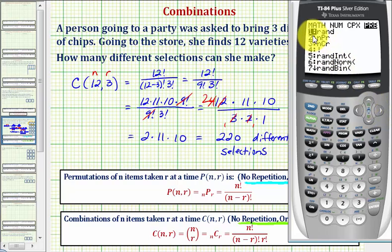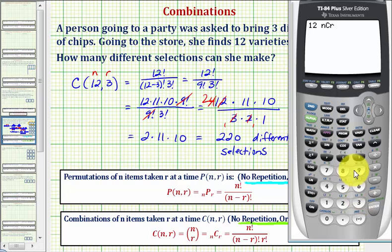So we can press three, or go down and highlight three, and then press enter. I'm just going to press three, and now we enter r, which is three, then enter. Notice how this does verify our work by hand is correct.